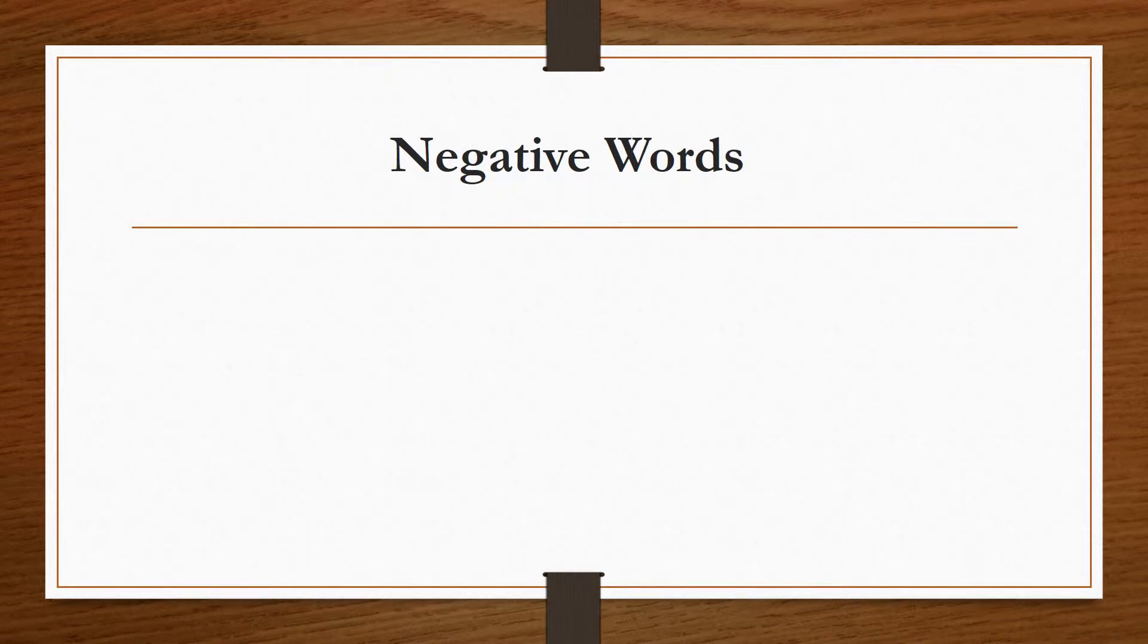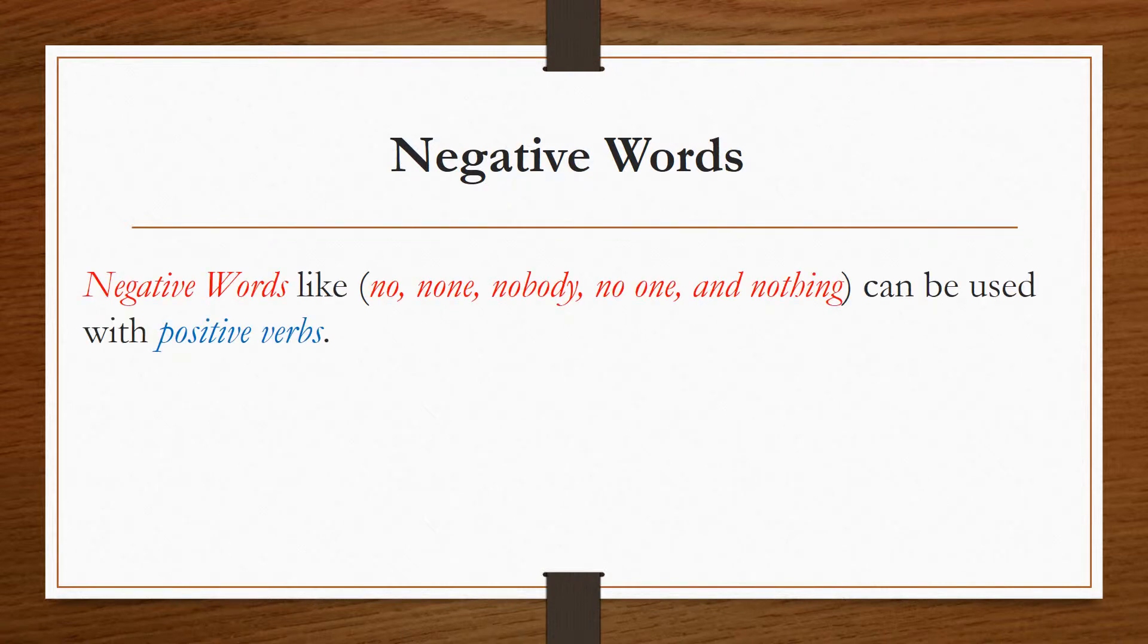When we want to say that something is not true or is not the case, we can use negative words, phrases, or clauses. Negation can happen in a number of ways. Most commonly, when we use a negative word like no, none, nobody, no one, and nothing.